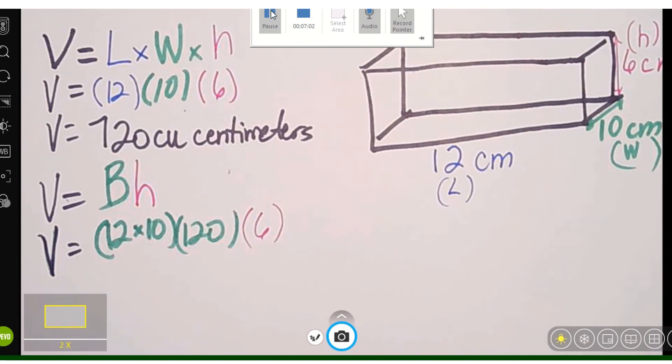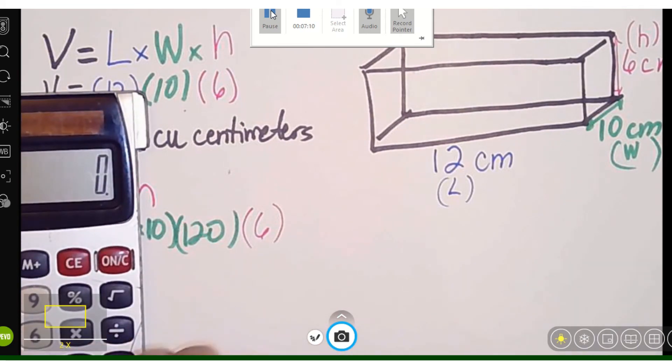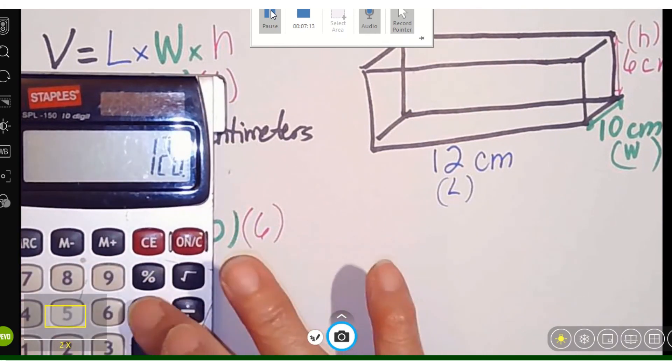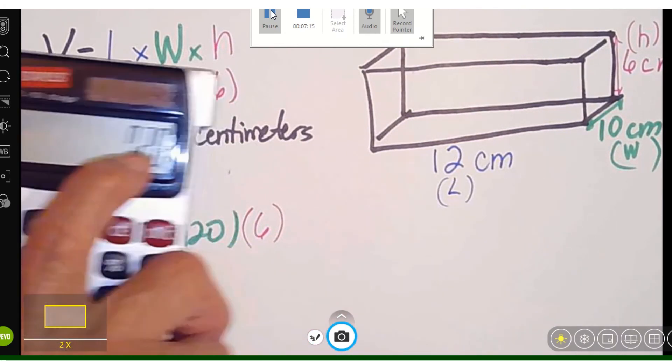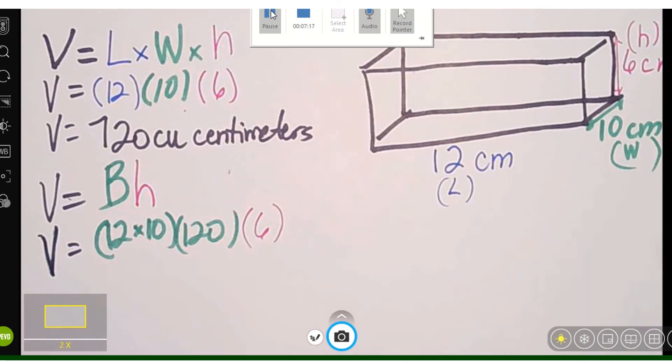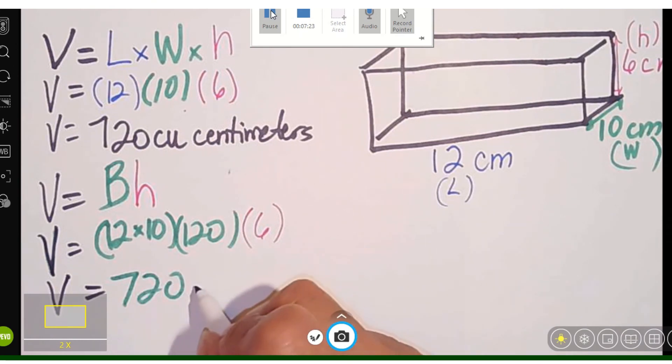So now we have 120 times 6. And that is 120 times 6 equals 720. So V = 720 cubic centimeters.